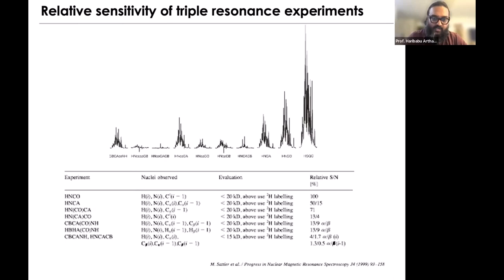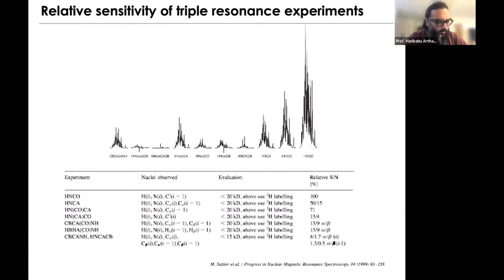The most sensitive experiment in this suite is the HNCA. The sensitivity is relative to the NHSQC — the two-dimensional experiment — where all the three-dimensional experiments include additional magnetization transfer. In solution state NMR, we always like to start with a high-gamma nucleus and end with a high-gamma nucleus, because the sensitivity is proportional to the gamma of the excited nucleus and the gamma of the detected nucleus to the power of 3/2. Starting and ending with hydrogen gives much better sensitivity.